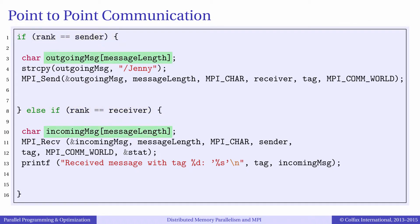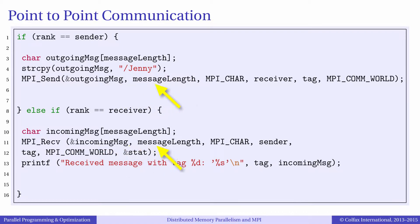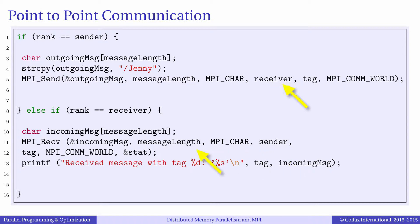The message itself is an array — in our example, an array of characters. Communication functions must specify the location and size of the message, the source and destination ranks, and they may also specify a tag which is a user-defined identifier of the message.